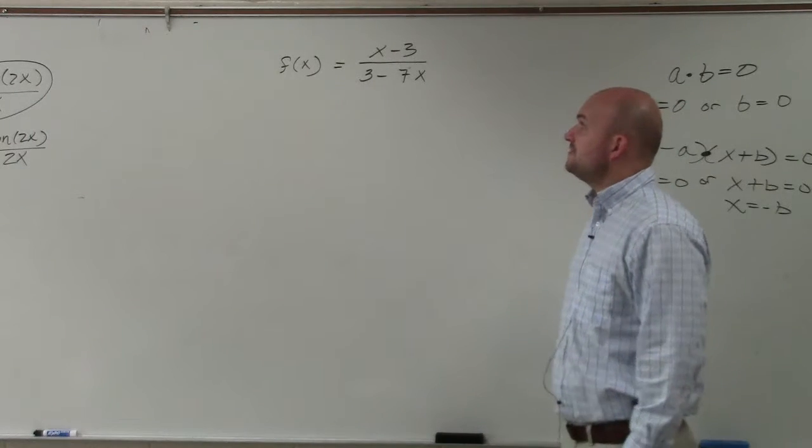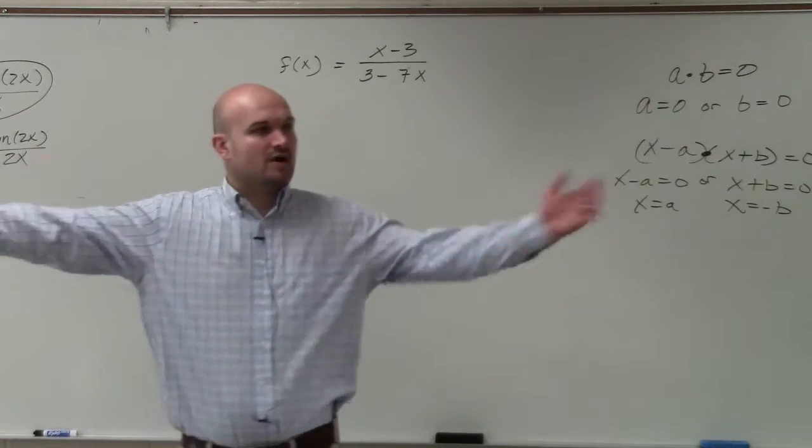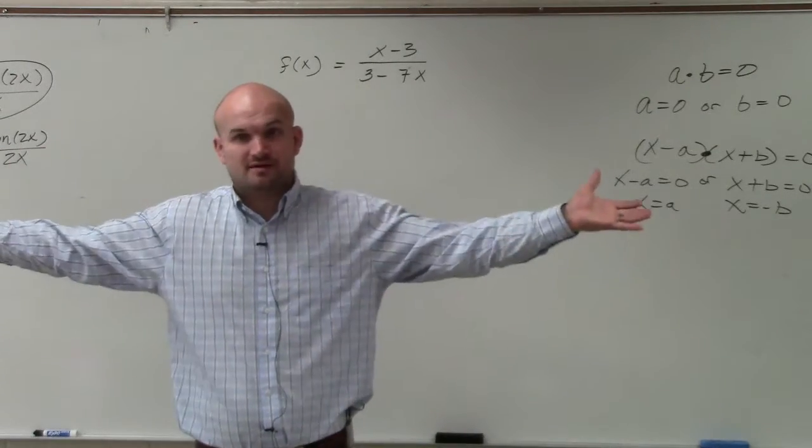So in this one, we have f of x equals x minus 3 divided by 3 minus 7 times x. Again, our implied domain is all real numbers, right? Always all real numbers.